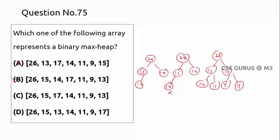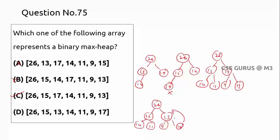Checking option C: 26, 15, 17 — fine. 14, 11 under 15 — fine. 9 and 13 under 17 — fine. For each node, compare only with its direct children, not across subtrees. So don't compare 15 with 9 and 13, or 17 with 14 and 11. This option satisfies all conditions. The last option has 17 in the wrong position, so that fails. Our answer is option C.